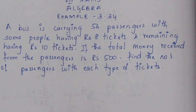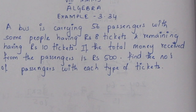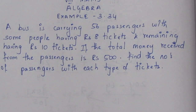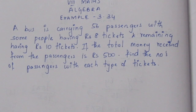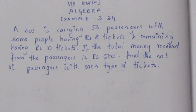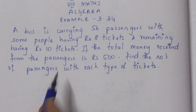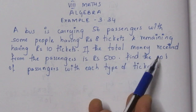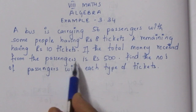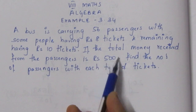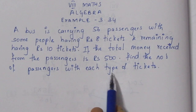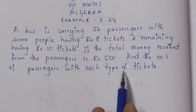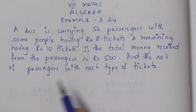Let's see: a bus is carrying 56 passengers, with some people having Rs.8 tickets and the remaining having Rs.10 tickets. If the total amount received from the passengers is Rs.500, find the number of passengers with each type of ticket.